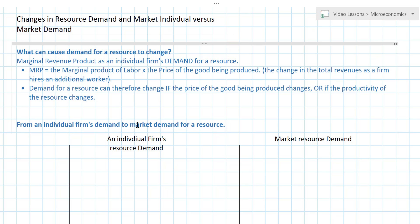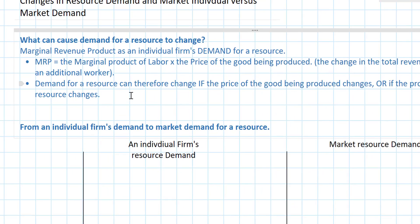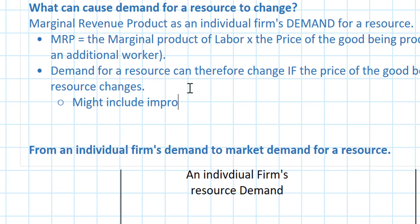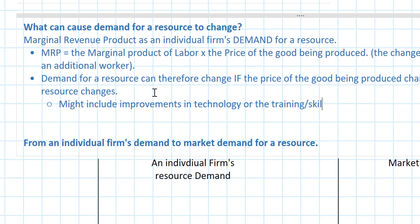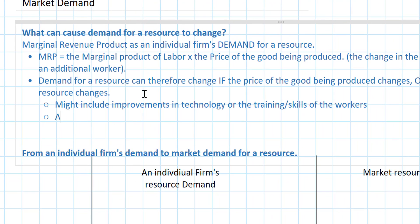What could cause productivity of labor, or productivity of any resource, to change? Some things that could cause productivity to change might include improvements in technology or the training and skills of the workers. An increase in demand for the good being produced are two things that would cause demand for the resource to increase. If the resource became more productive, firms would want to hire more of that resource. The more productive labor becomes, the more demand for labor there is.